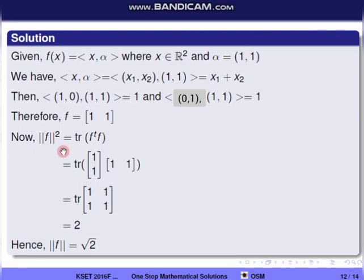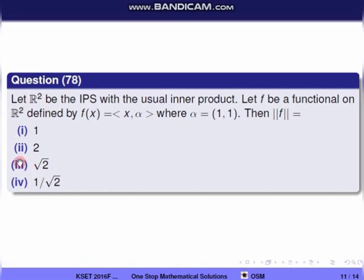So norm f squared = inner product ⟨f,f⟩. Using the usual inner product, which is trace of f^T·f. That equals trace of [1,1]^T · [1,1] = trace of the matrix [[1,1],[1,1]], which equals 2. So norm f squared = 2, and norm f = √2. The correct option is the third one.